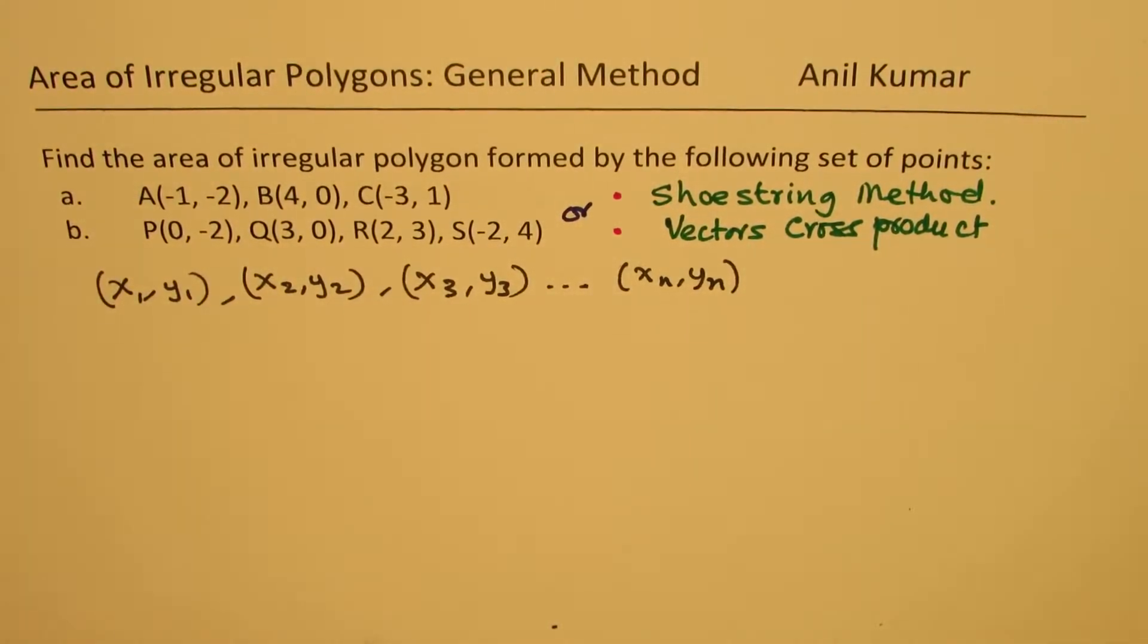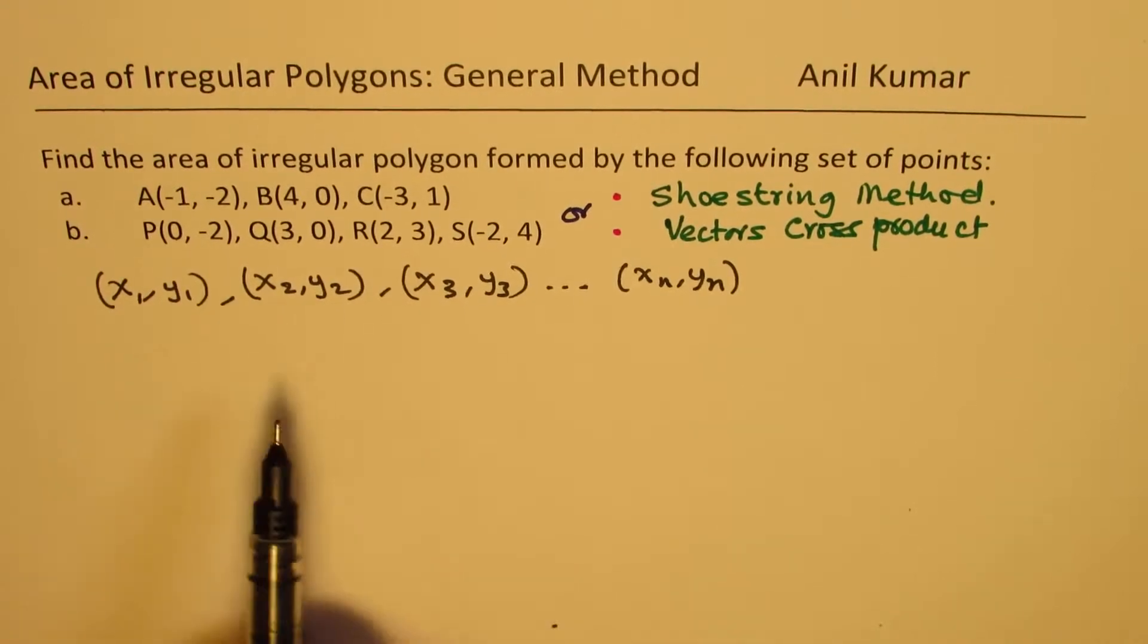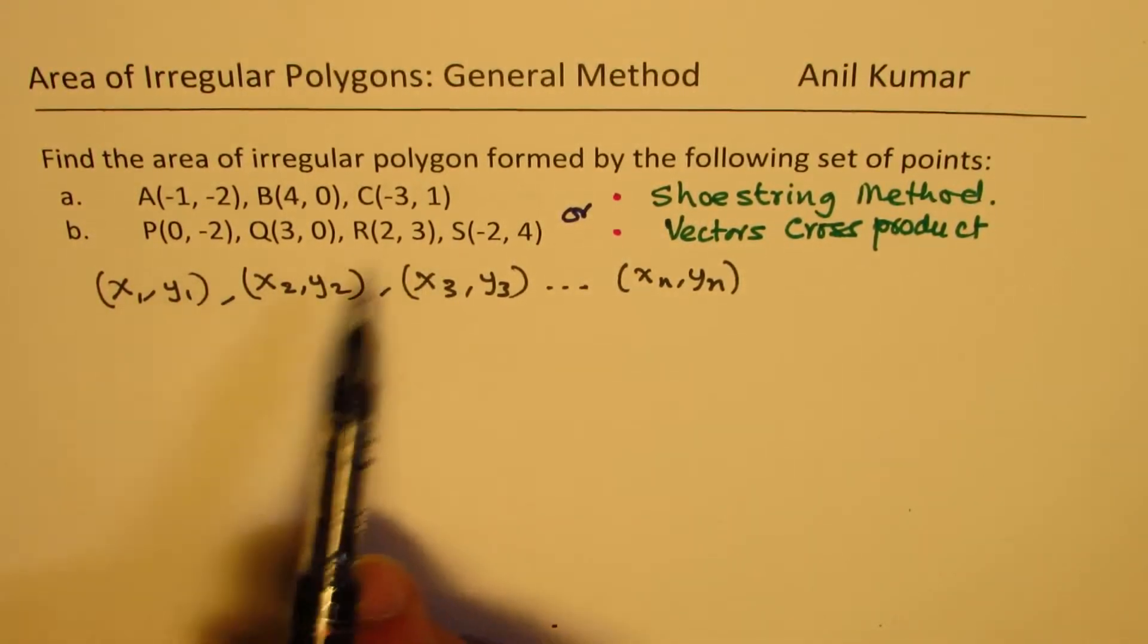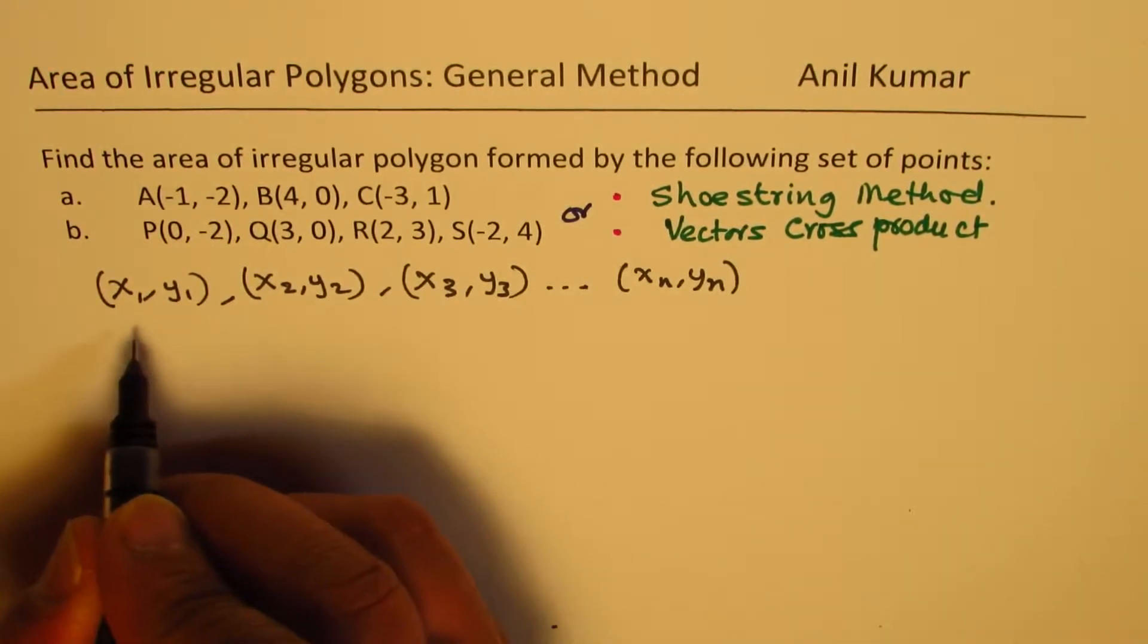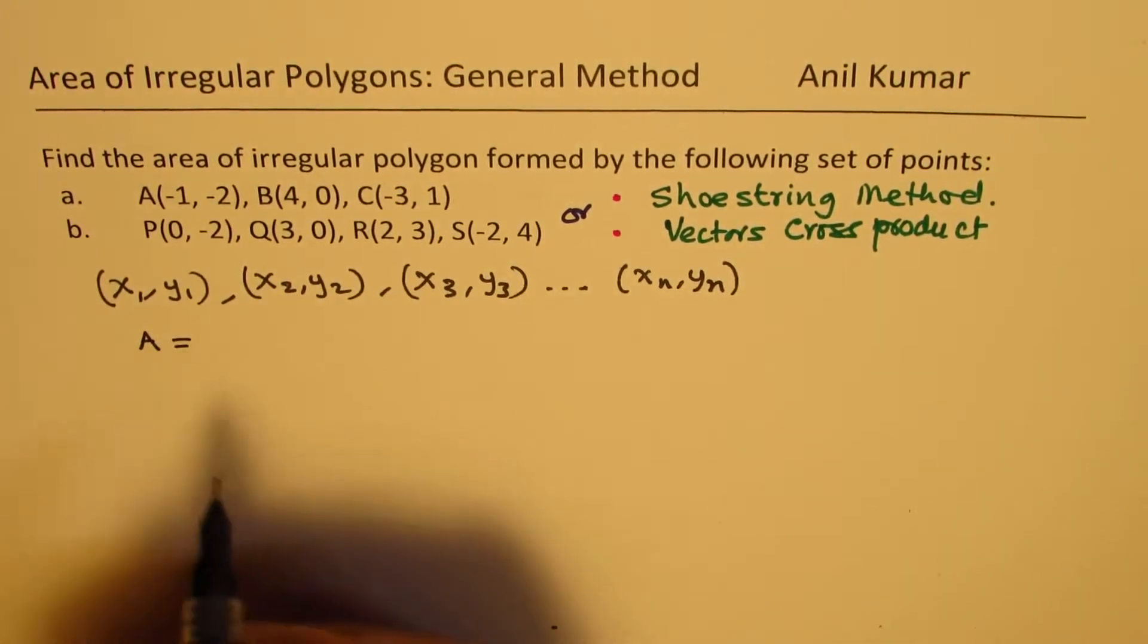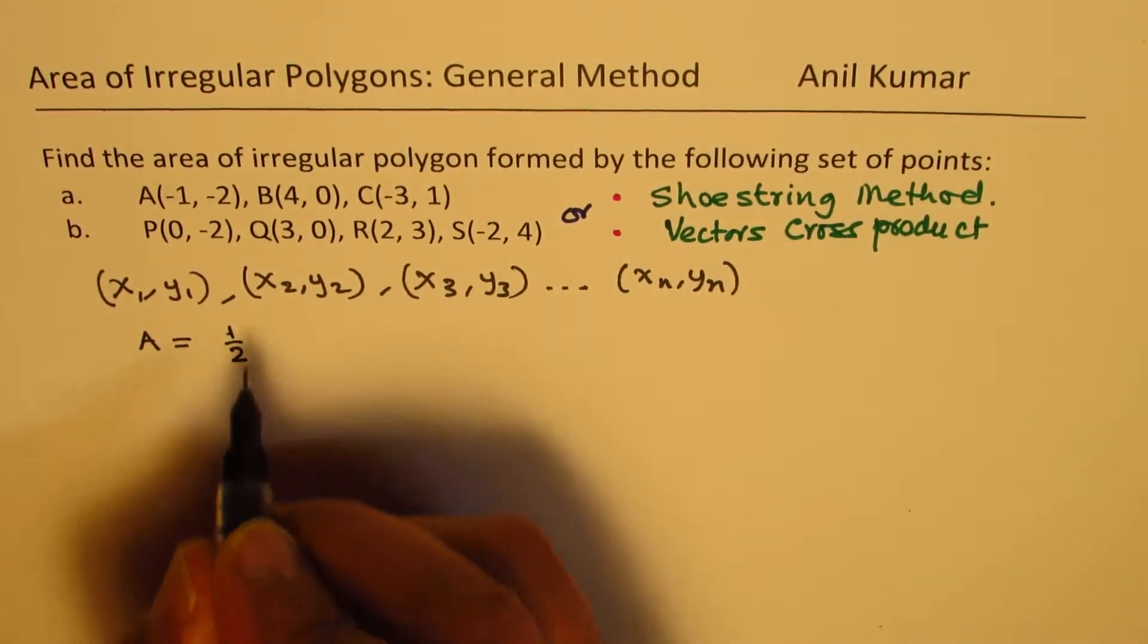If we have any number of coordinate points, in that case, the area can be calculated by finding the product as area is half of.